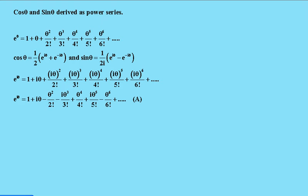Cos theta and sine theta derived as power series. Given that e to the theta equals 1 plus theta plus theta squared over factorial 2, etc.